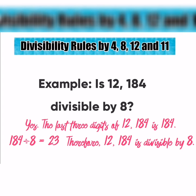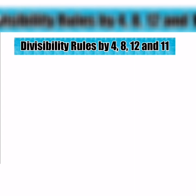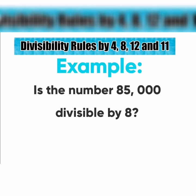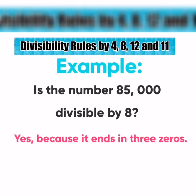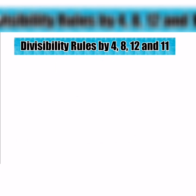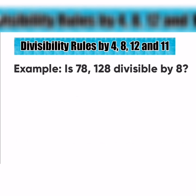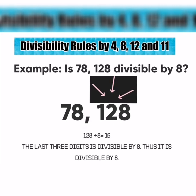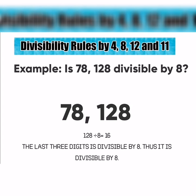Another example: Is 85,000 divisible by 8? The answer is yes, because it ends in three zeros. Let's have another example. Is 78,128 divisible by 8? 78,128 ends with 128, which is divisible by 8. Thus, it is divisible by 8.